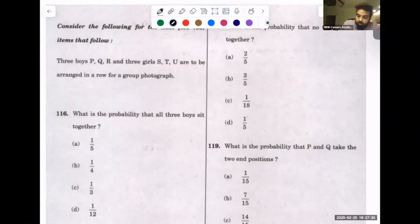Let's start with it. Three boys P, Q, R and three girls S, T, U are to be arranged in a row for a group photograph. What is the probability all three boys sit together?